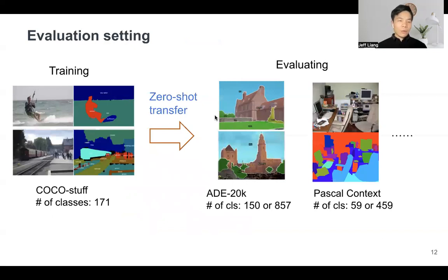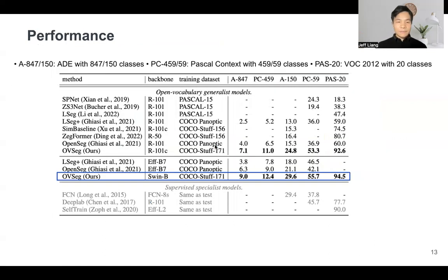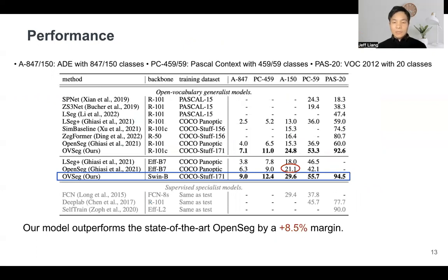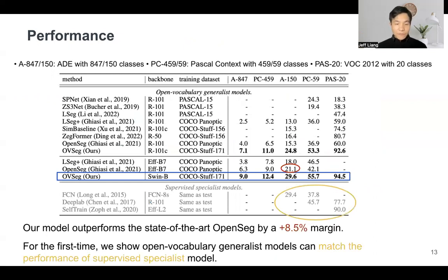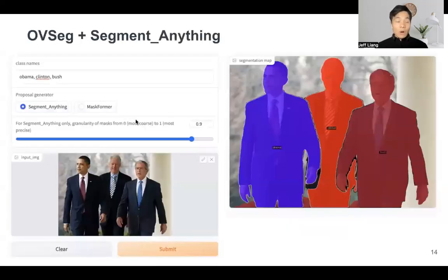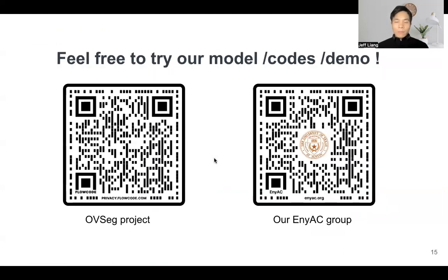For evaluation, we train our model on COCO and do zero-shot transfer learning on arbitrary segmentation tasks like ADE20K or Pascal Context. Our model achieves state-of-the-art results over five datasets. Compared with the state-of-the-art OpenSeg, our model outperforms it by a large 8.5 mIoU margin. And for the first time, we showed that open vocabulary models can match the performance of supervised models. Our OVSeg is also applicable to segment editing, and our model can provide fine-grained classes. Our model's code is open source — feel free to try it.